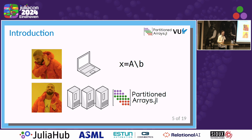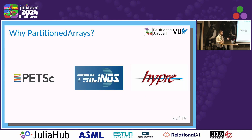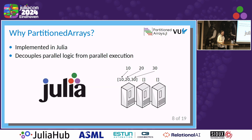And this is what PartitionedArrays tries to do. It's a library that provides distributed vectors and sparse matrices, and on top of these, solvers to solve these types of systems. You can ask whether this is already done in other packages — there are very famous packages that also provide sparse linear solvers. But our package has two main features. First of all, it's fully implemented in Julia. But I think there is another nice feature: it's implemented using an alternative programming model that decouples the parallel logic from the parallel execution of your problem, which greatly helps in developing and debugging your applications.